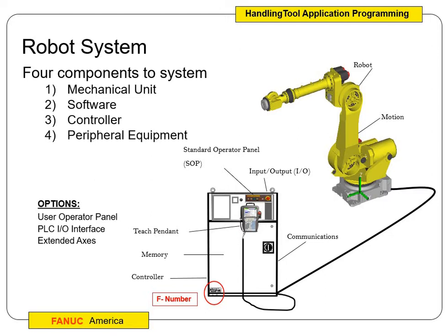Peripheral equipment is stuff you add on that the robot can do tasks with. The software for the robot entails what you're actually typing in commands on the teach pendant — it's called Handling Tool, and that's what we're going to be doing. One of the robots has weld software on it, though we don't have the welding tool, so you'll see some different commands specific to welding. Lastly is the controller — that's where the PLC is, everything that interfaces, where the software actually controls all the I/O.